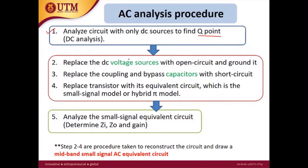After you have done the DC analysis, the next thing is steps 2, 3, and 4. Steps 2 through 4 are procedures taken to reconstruct the circuit and draw what we call the mid-band small signal AC equivalent circuit. To do that, we replace the DC voltage source with ground, replace the capacitors with short circuits, and then replace the transistor with the hybrid pi model.